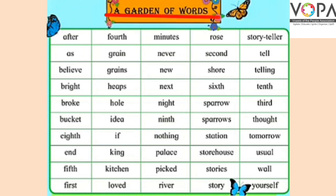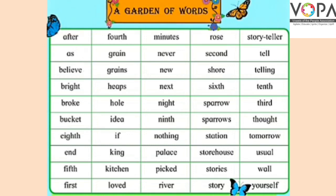A garden of words. चलिए बच्चों, हम पहला लफ्ज़ देखते हैं: 'after' — a, f, t, e, r. After, जिसके माना होते हैं बाद में। 'As' — a, s. 'Believe' — b, e, l, i, v, e. Believe यानी भरोसा करना।